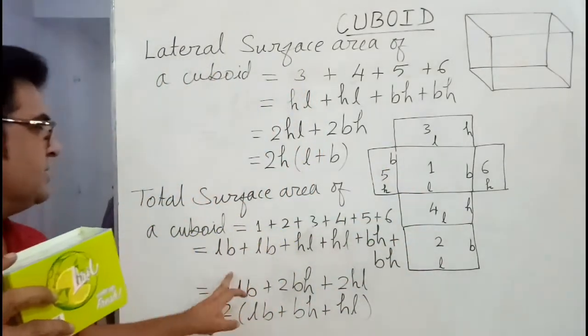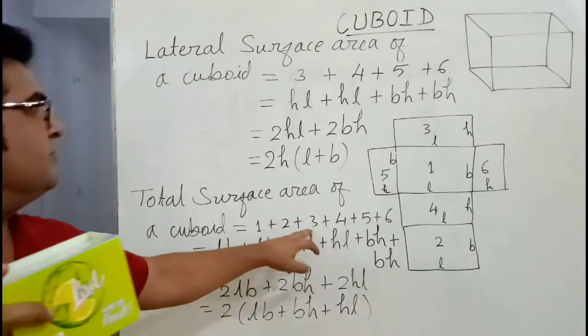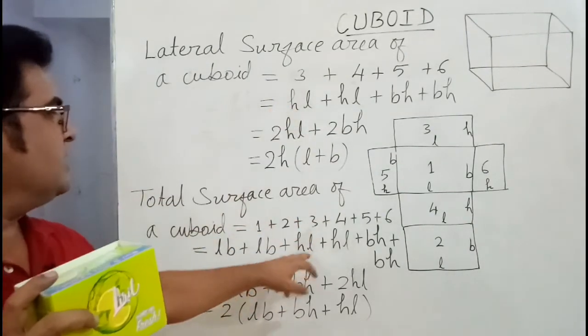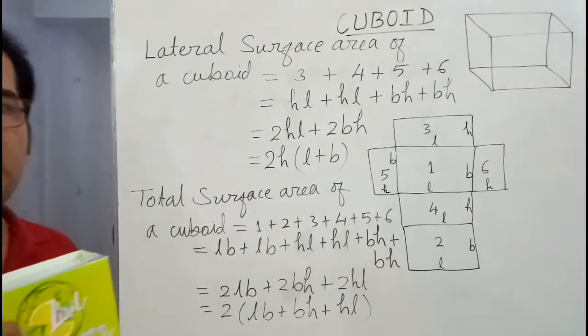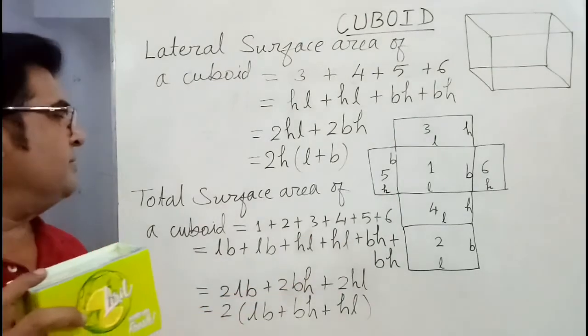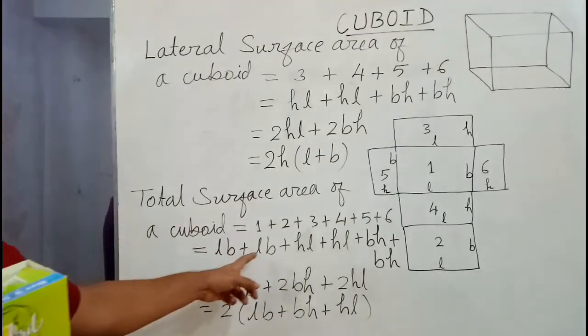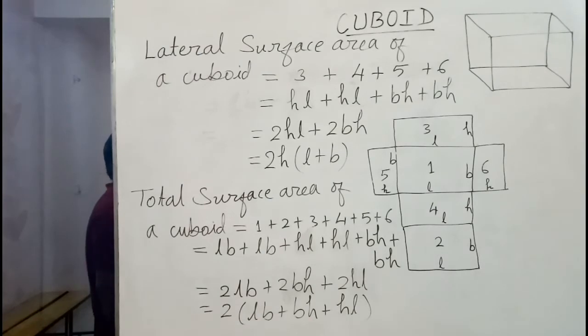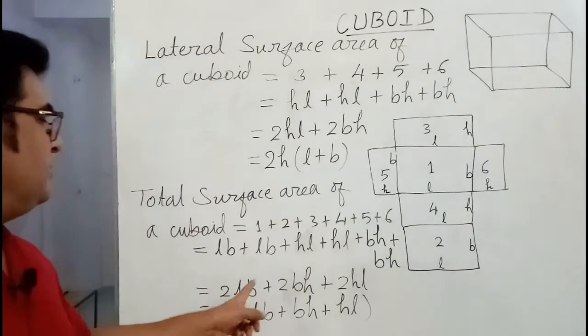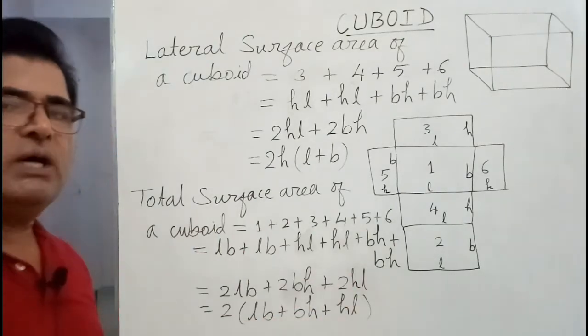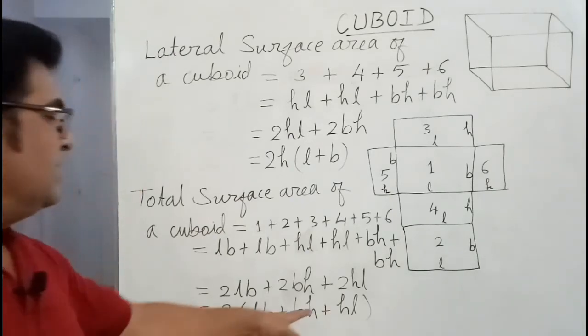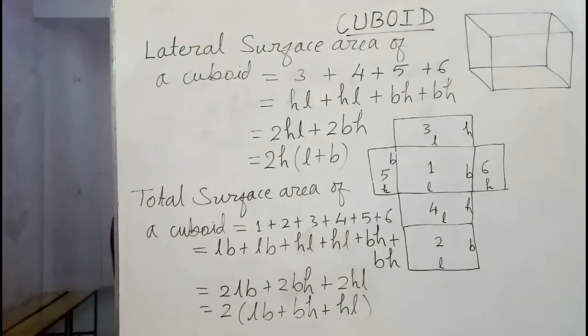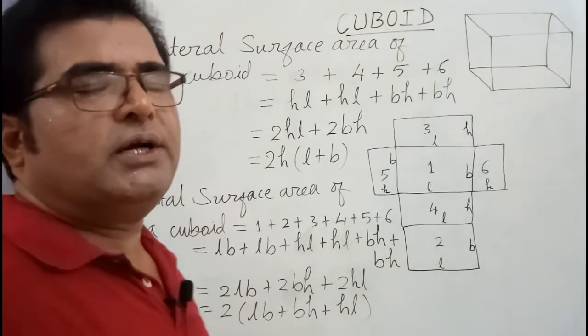So we write LB for face number 1, LB for face number 2, face number 3 already you know that HL, face number 4 also HL, face number 5 BH, face number 6 BH. You have to add all of that. Then we see that LB is 2 times, BH is 2 times, HL is 2 times. So we write 2LB plus 2BH plus 2HL. Then 2 is common here, so it will be 2 into (LB plus BH plus HL). This is the formula for total surface area of a cuboid.